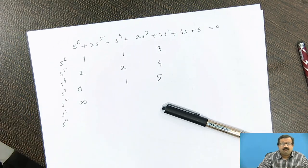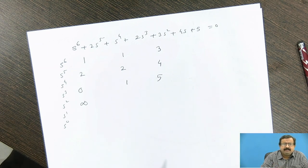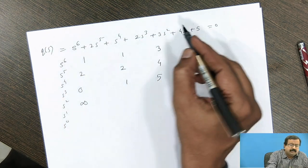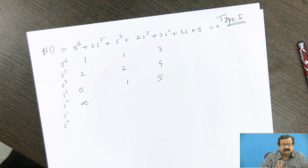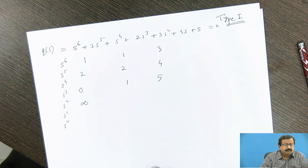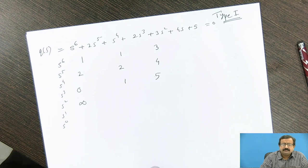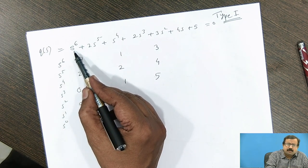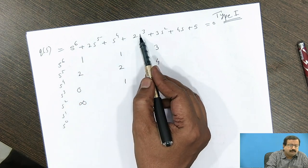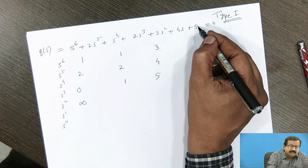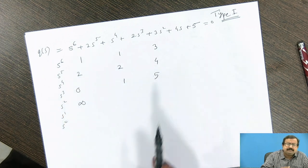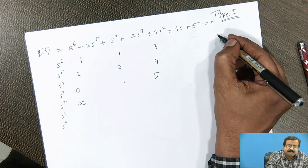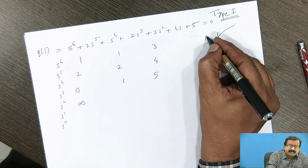Let's work through an example. The given equation is a sixth-order polynomial Q(s). First, I check the necessary condition: it is a sixth-order polynomial, so the powers are S^6, S^5, S^4, S^3, S^2, S^1, and S^0 — all present, making it a complete polynomial. All coefficients have the same sign (positive). Therefore, the necessary condition is satisfied.